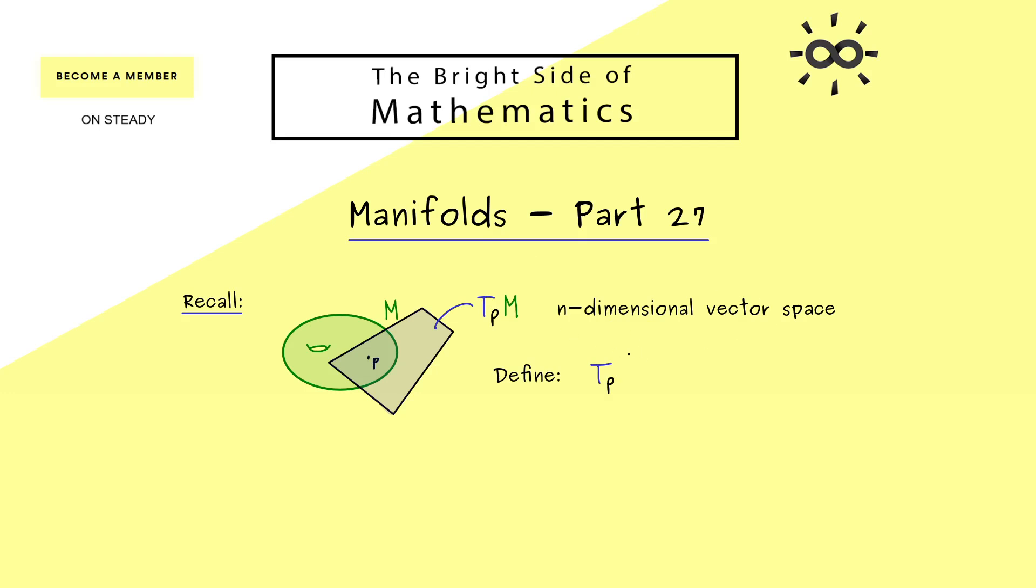For every vector space we can also define the dual space with a star. In order to make the notation shorter, the star is pushed to the T instead of behind the whole vector space. So it means the same thing, namely the dual space.